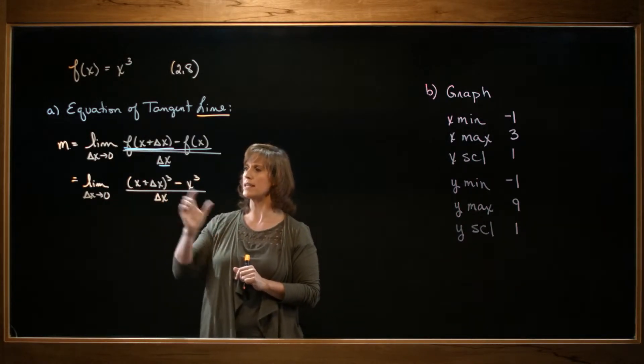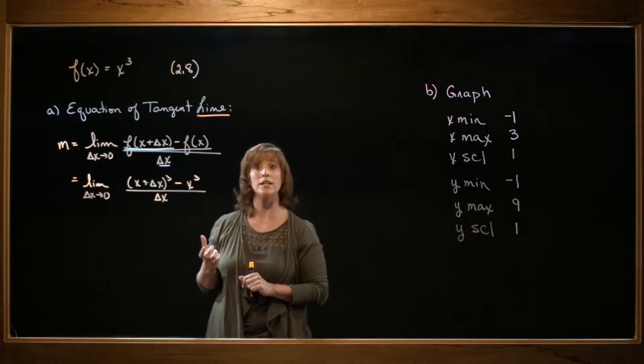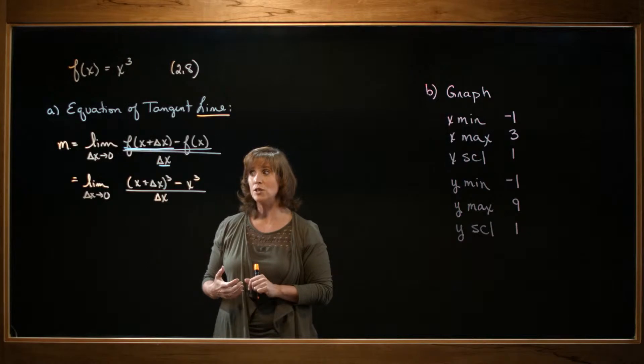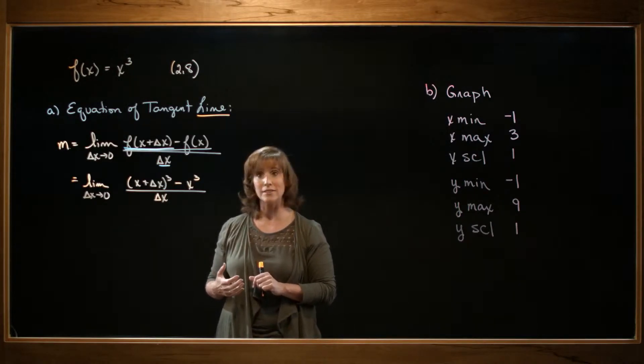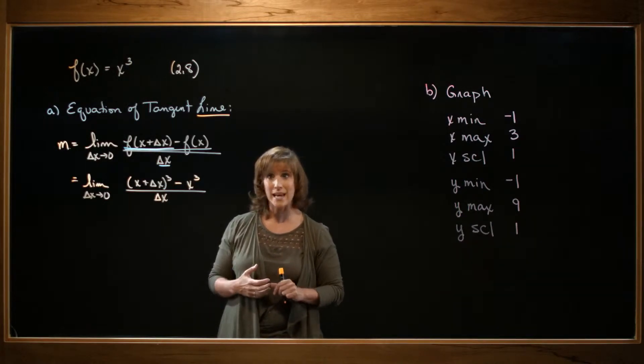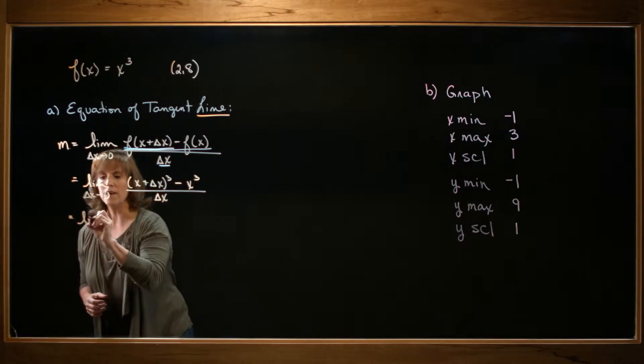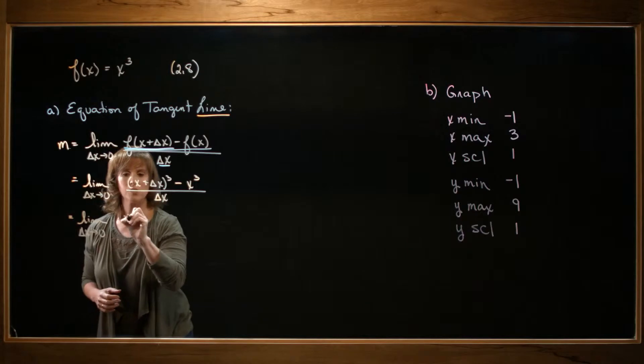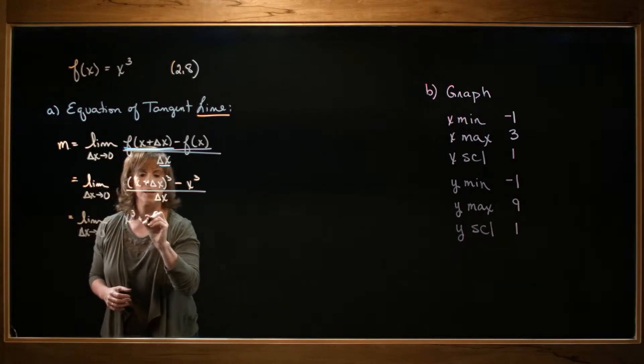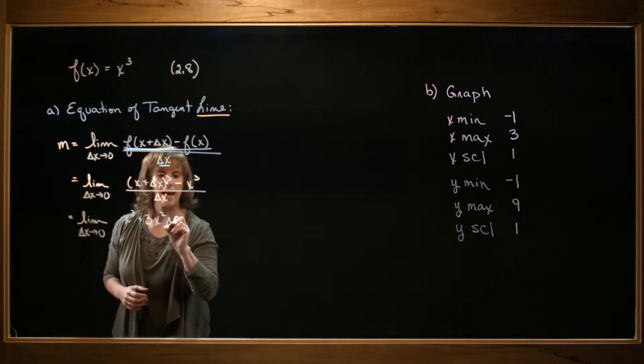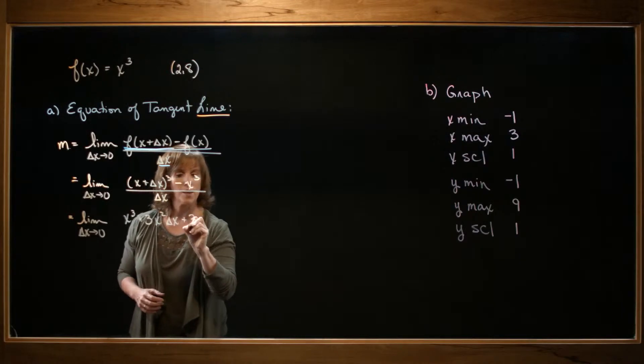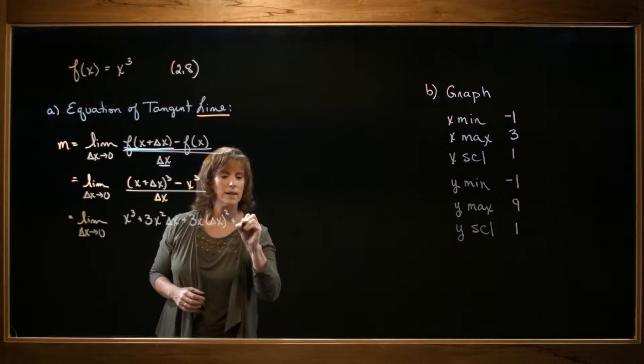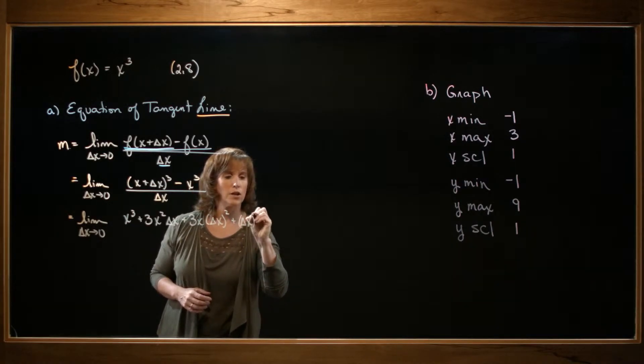As I look at this, I notice that I have x plus delta x quantity cubed. I'm going to go ahead and multiply that out. So what I need to do is multiply x plus delta x by itself three times. So if I do that, the result is going to be x cubed plus 3x squared delta x plus 3x delta x squared